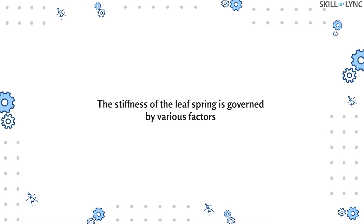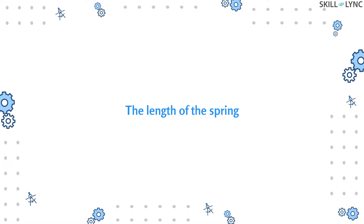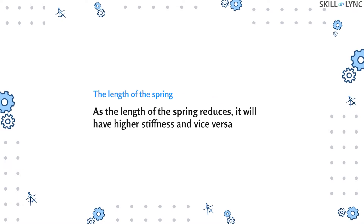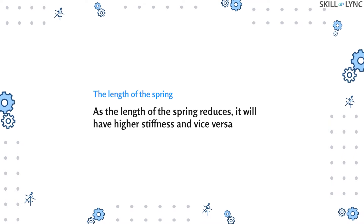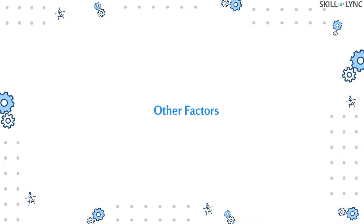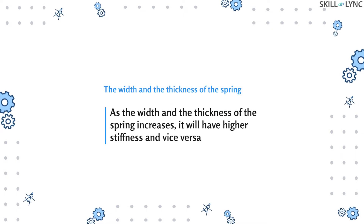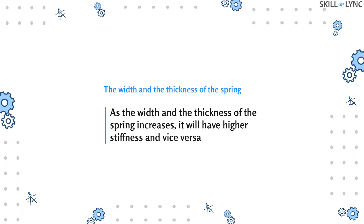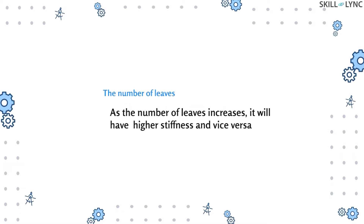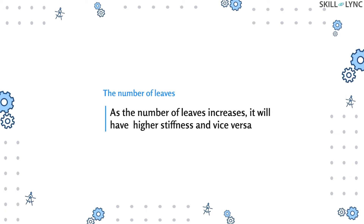The leaf spring's stiffness, or spring rate, is governed by various factors. The first is the length of the spring — as the length reduces, the stiffness increases, and as the length increases, the stiffness reduces. The same applies to the width and thickness: as these increase, the stiffness increases and vice versa. The last factor is the number of leaves — as the number of leaves increases, higher will be the stiffness of the suspension.